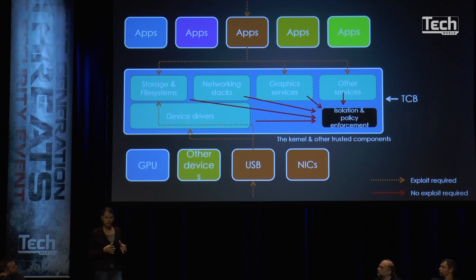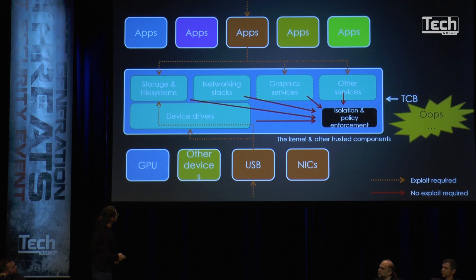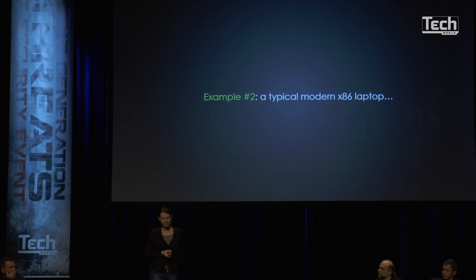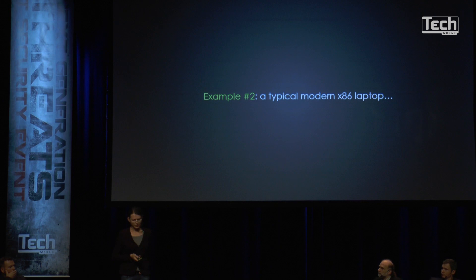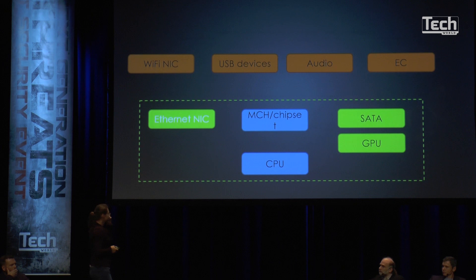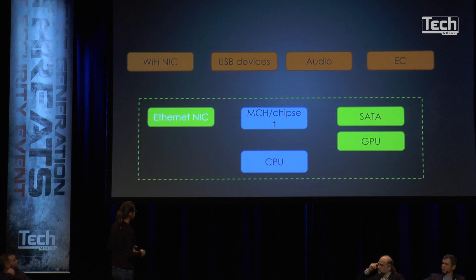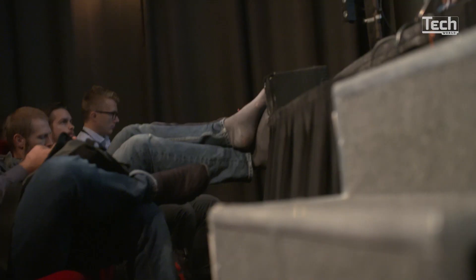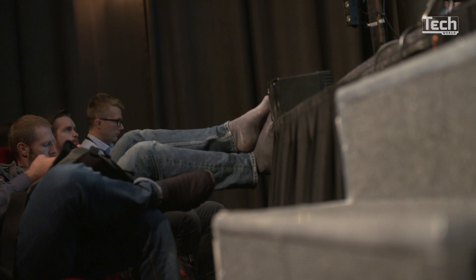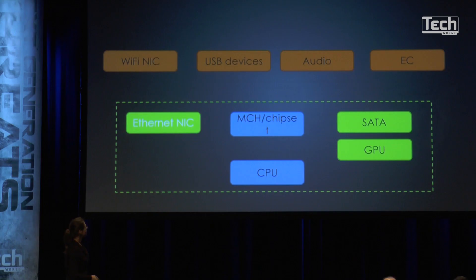So that's the problem. Let's take a look at the more interesting example of our times, which is a typical modern x86 laptop. A typical laptop consists of the CPU, the memory controller hub — also called chipset. In the past we used to have Northbridge and Southbridge; today they have been merged. MCH is connected to DRAM. More recently, the MCH and chipset have been combined with the CPU on Intel into one physical package.